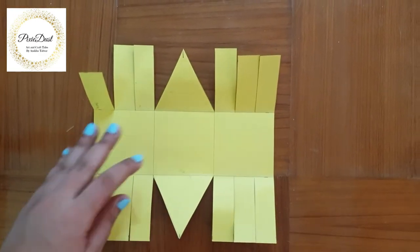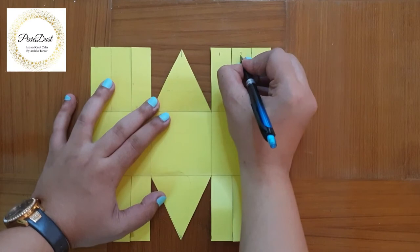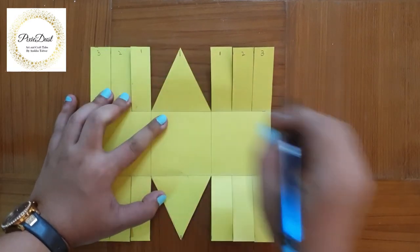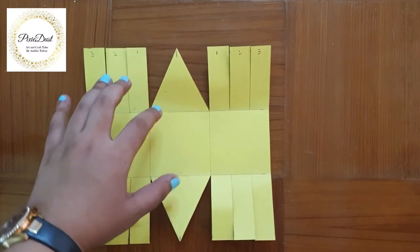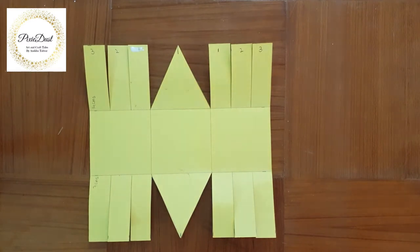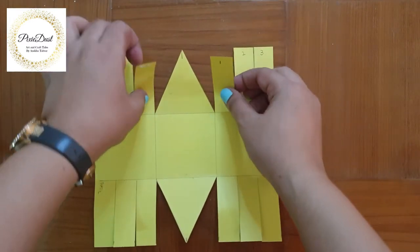Now I'm going to number the strips on each side of the triangle so that the step of gluing the strips is easier to demonstrate, but you're not supposed to do this step while making your paper basket. Now I'm going to glue the strips numbered one together.